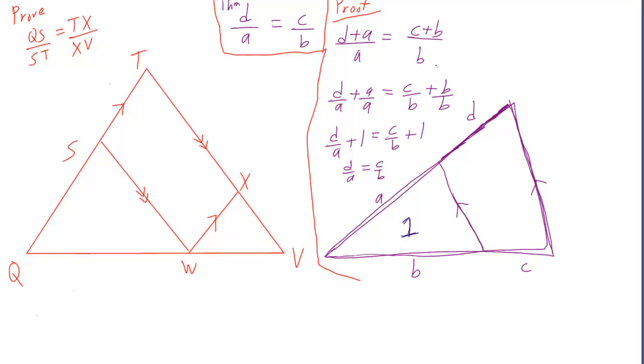Very similar thing happens on the right side. c plus b over b can get changed to c over b plus b over b, which is equal to c over b plus 1.